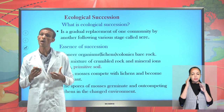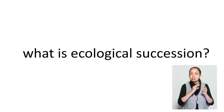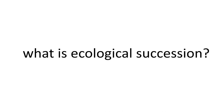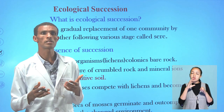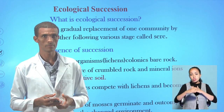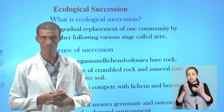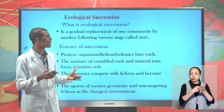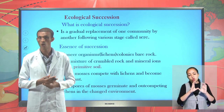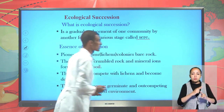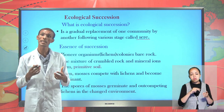Do you know what the term ecological succession means? Ecological succession is a gradual replacement of one community by another in a given sequence of stages. There is no life that can be found as it is — it is formed through a gradual or progressive replacement of one community by another following a stage which we call a sere.